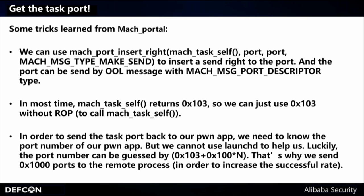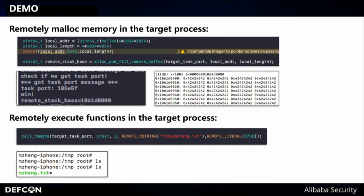In order to get the task port back to our pong app, we need to know the port number of our pong app. However, we can't use launchd to help us. That's why we send a lot of ports — because it can be brute forced. We send a lot of ports to the remote server in order to increase the success rate. After that we can try to remotely malloc memory in the target process, or just execute some functions in the target process.